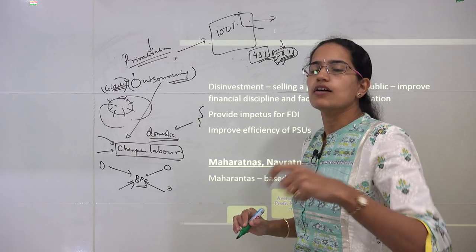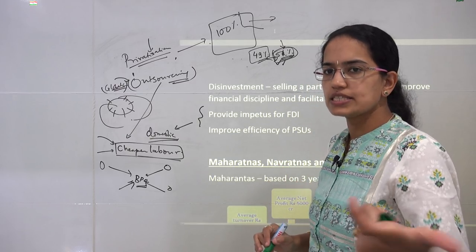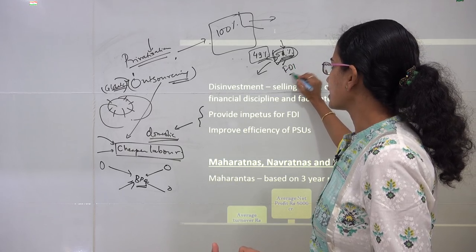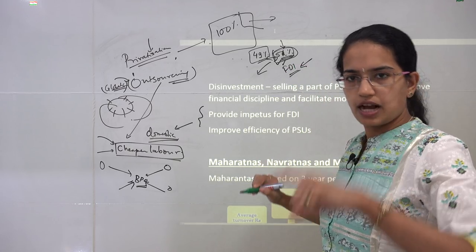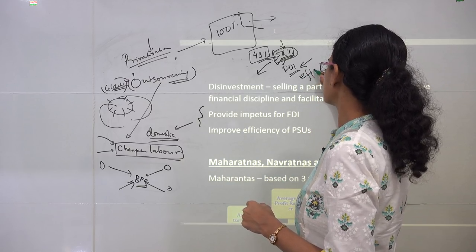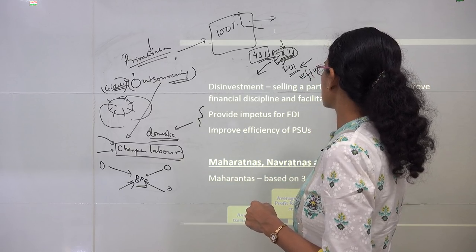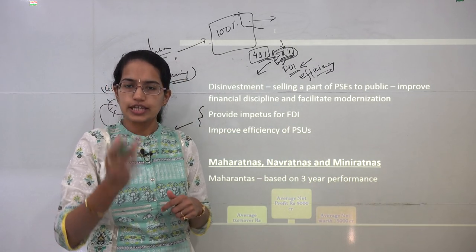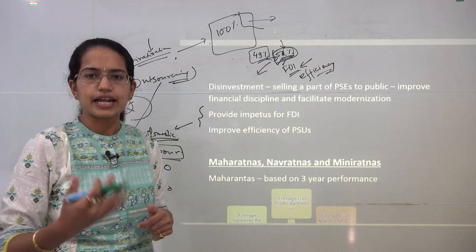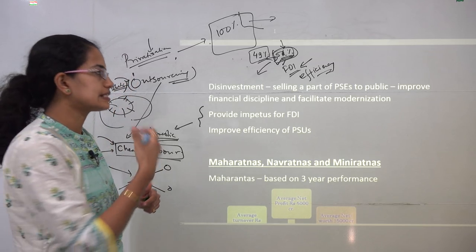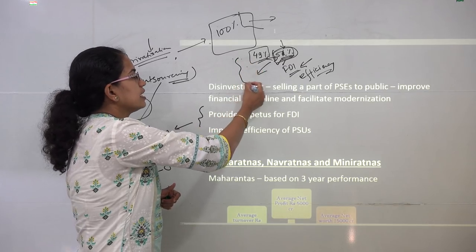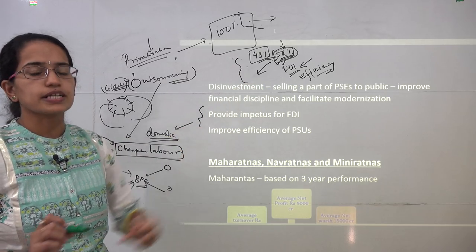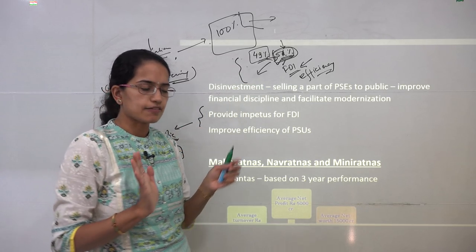If the government retains 51 percent holding, it remains a government-controlled company. The disinvested portion provides more foreign direct investment into that company and improves efficiency because it would be managed by people from the private sector, where management is stricter and performance rates are higher.